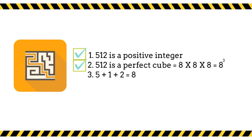Add the digits of 512, that is 5 plus 1 plus 2. The answer is 8, which is the same as the cube root of 512. Therefore, 512 is a Dudeney number.